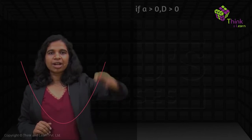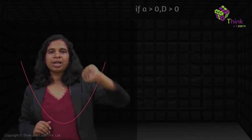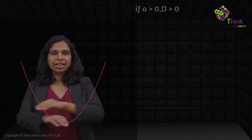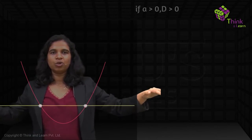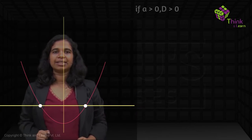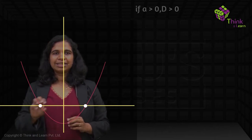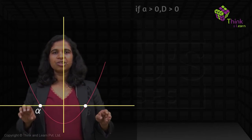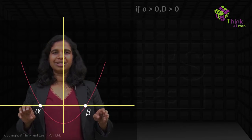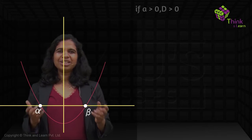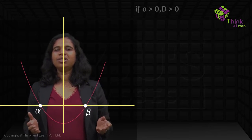So upward facing — I draw my graph this way. D greater than 0, so it cuts the x-axis at two points. This is my x-axis. That's the graph. Let's say this root is alpha, this root is beta.